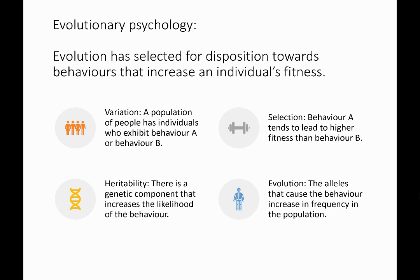Heritability: there's a genetic component that increases the likelihood of behavior. If we have variation, selection, and heritability, that will lead to evolution. The alleles that cause the behavior increase in frequency within the population, and so the population will change and evolve this new behavior.